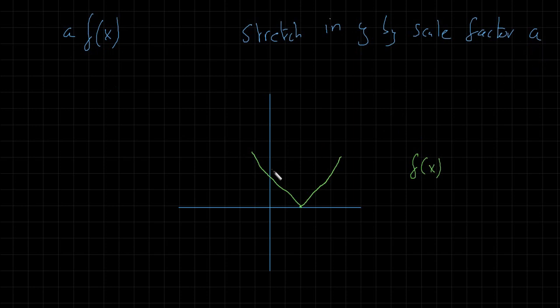Basically every point on the graph to get its value on the new graph a f of x we times it by a scale factor of a and leave x alone. So let's see what that looks like.